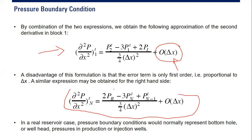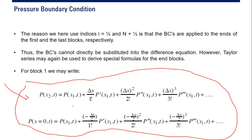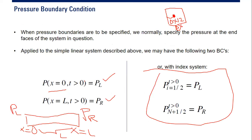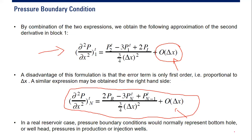In a real reservoir case, the pressure boundary condition would normally represent bottom-hole or well-head pressure in production or injection wells. For this case, the boundary condition is the pressure on the left and the pressure on the right. In real reservoir cases, we can use well bore pressure — bottom-hole flowing pressure — and external pressure. We can also use well-head pressure for production or injection wells.